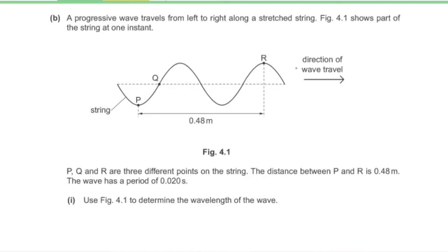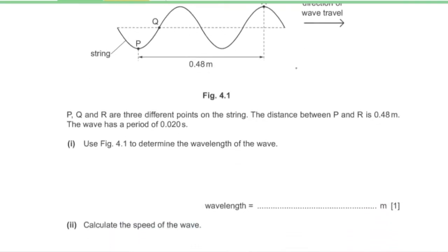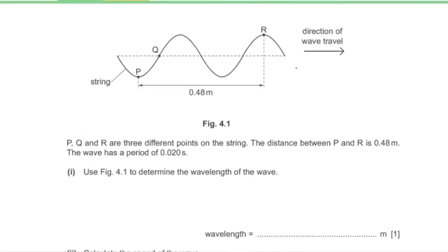Part B: a progressive wave travels left to right along a stretched string. Figure 4.1 shows part of the string with points P, Q, and R. The distance P to R is 0.48 m and the period is 0.02 s. Part 1: determine the wavelength.